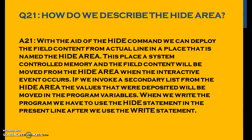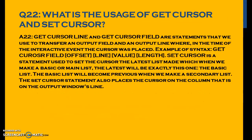How do we describe the hide area? With the aid of the HIDE command we can store the field content from actual lines in a place called the hide area, which is system-controlled memory. The field content will be moved from the hide area when the interactive event occurs. If we invoke a secondary list from the hide area, the values that were stored will be moved into the program variables. We have to use the HIDE statement in the present line after the WRITE statement.